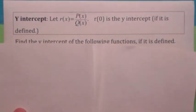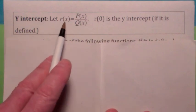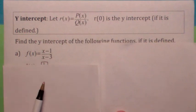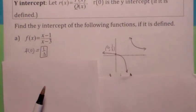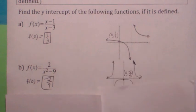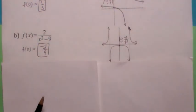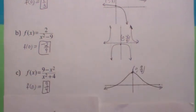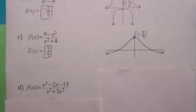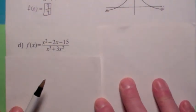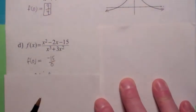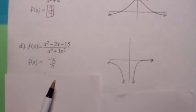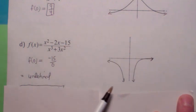Y-intercepts are pretty easy: just plug in x equals 0 and see what y is. For the examples shown: plugging in 0 gives 1 third; another gives negative 2 ninths; another gives 9 fourths. But in one case, plugging in x equals 0 gives undefined — so unlike a polynomial function, a rational function doesn't have to have a y-intercept. That's a situation where you would actually have a vertical asymptote at x equals 0.